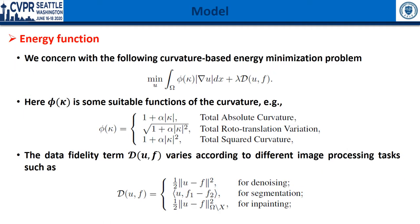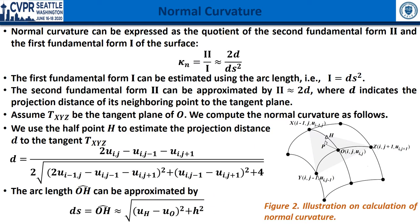Concerning the curvature-based minimization problem as follows: the curvature regularization is defined as the functions of curvature over the image surface, while the data fidelity term is derived according to different image tasks. In our formulation, we compute normal curvatures as the quotient of the second and first fundamental form of the image surface.